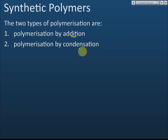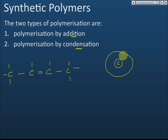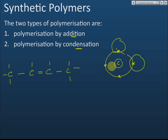Addition reactions occur in carbon compounds. Carbon is located in Group 14, and contains four valence electrons. Since it is not octet, it is not stable, so carbon shares these four valence electrons with other atoms to form four covalent bonds.